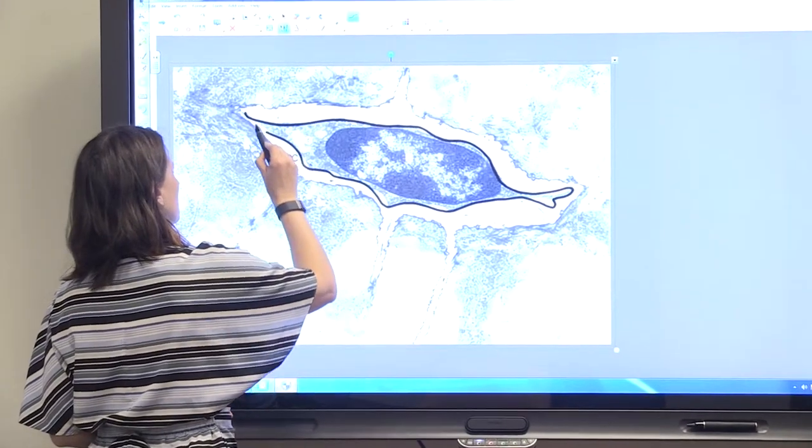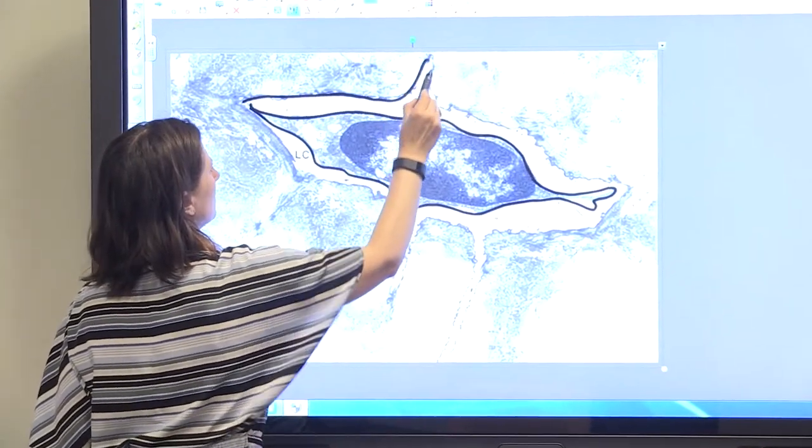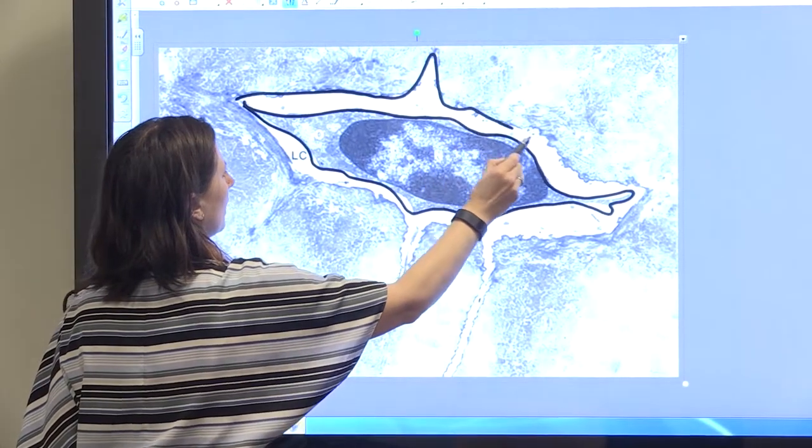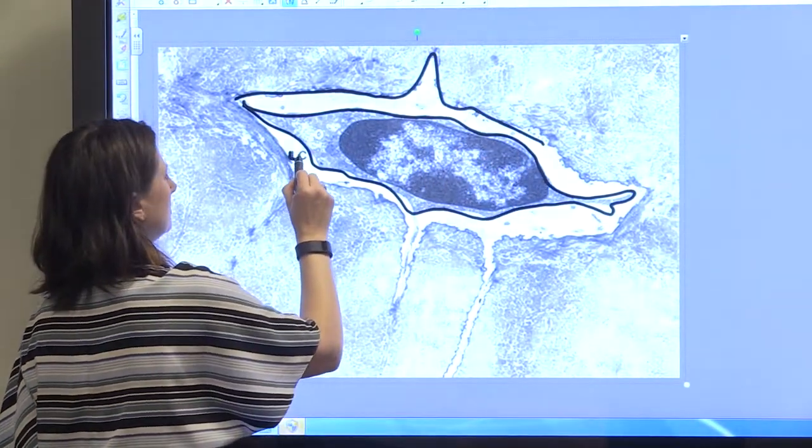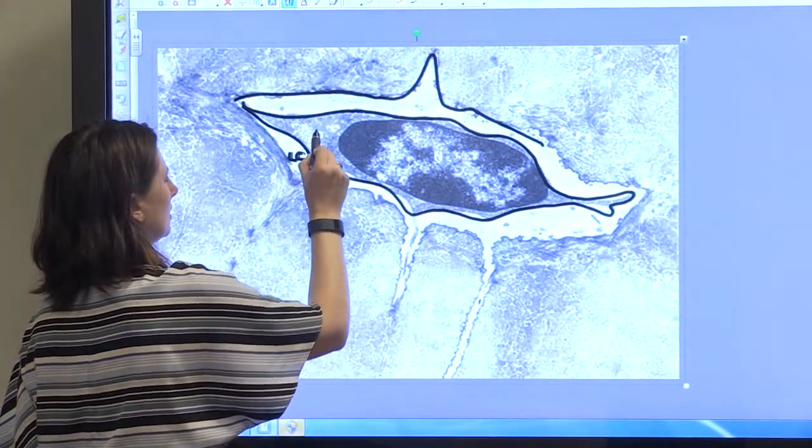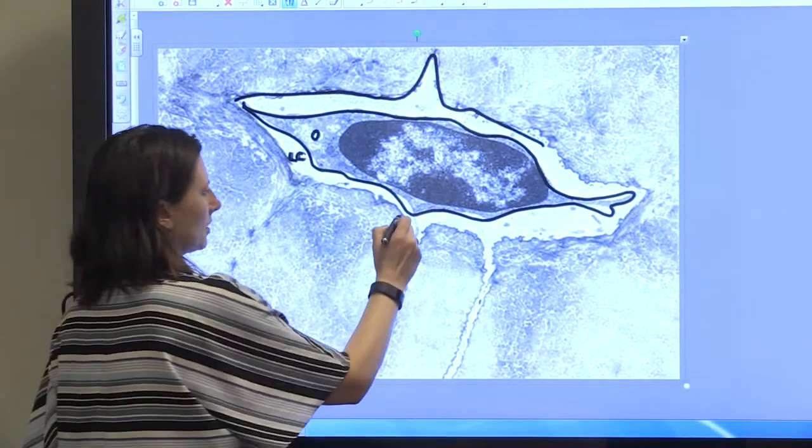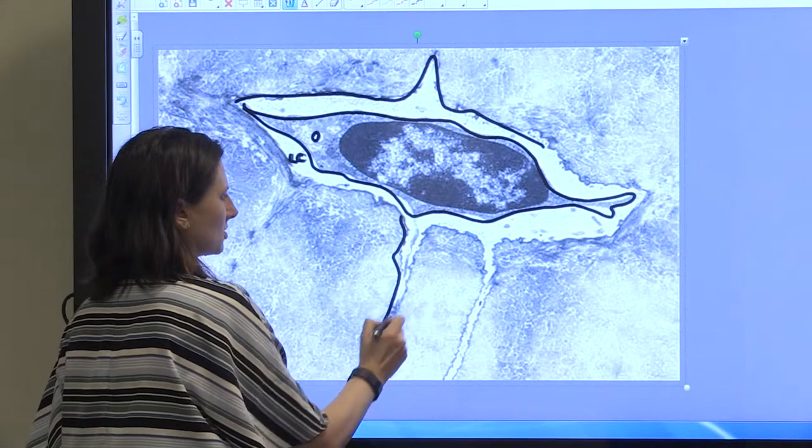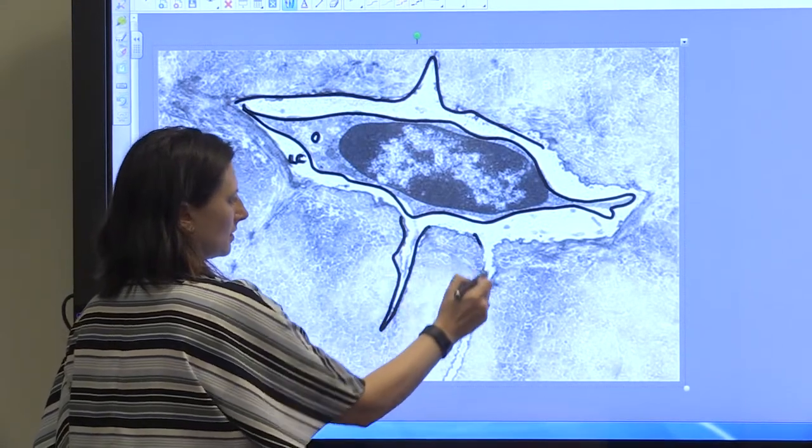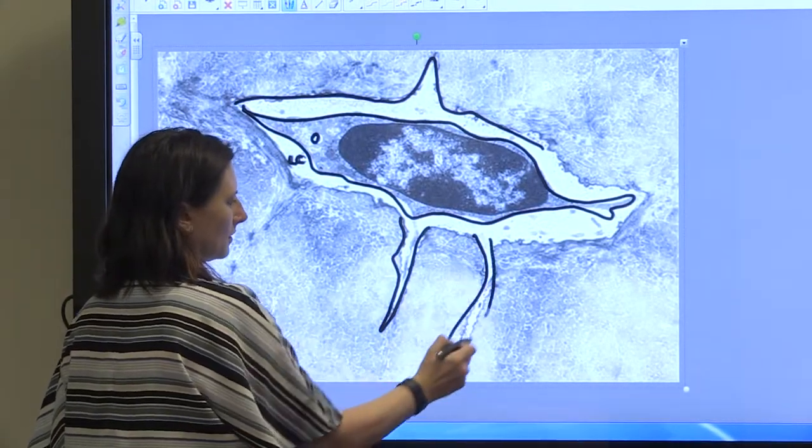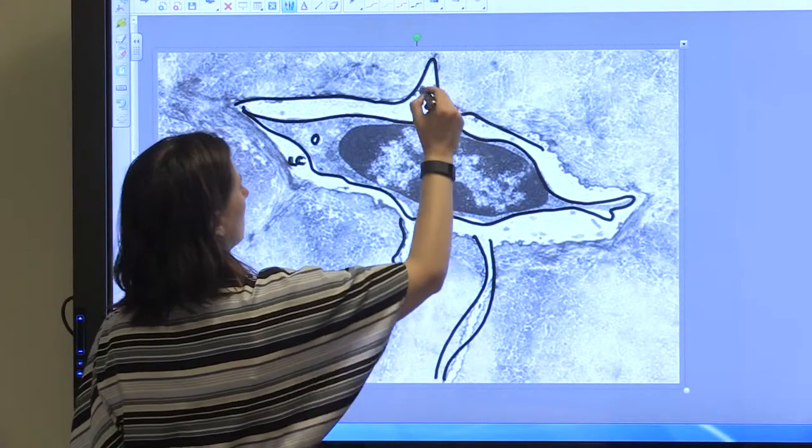And the lacuna is this outer space. Here it's notated LC for lacuna and O for osteocyte. You see these projections, and those are the canaliculi.